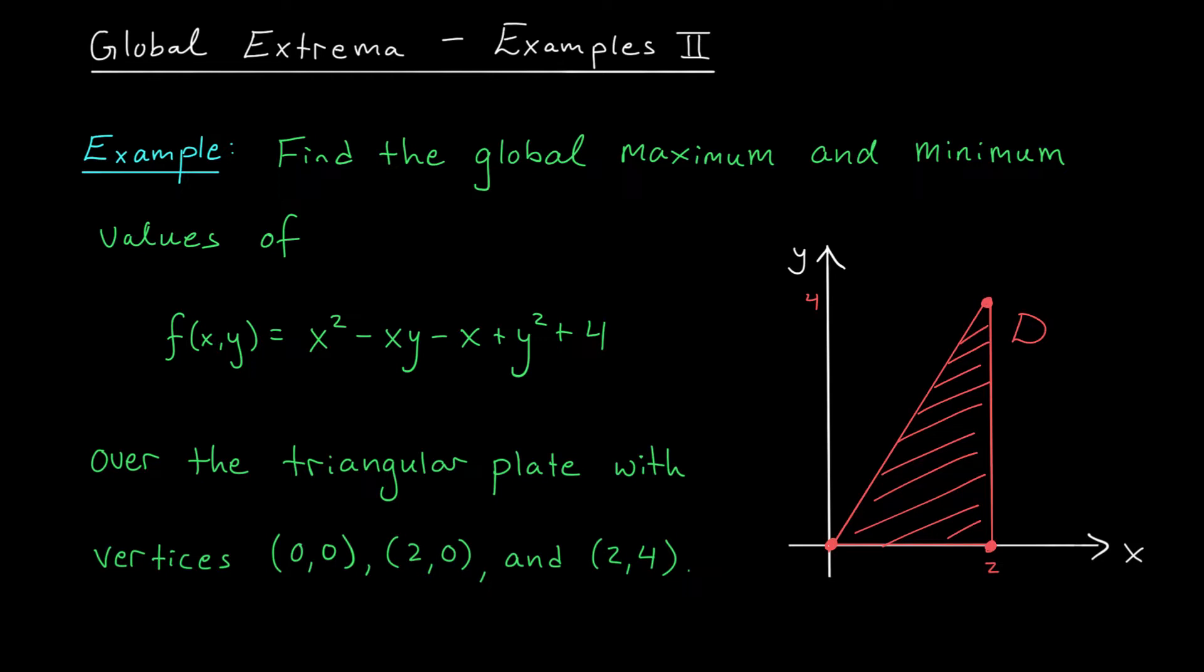Well, you know the drill, folks. The global max and min could either occur at critical points or at points along the boundary. So let's start by finding the critical points of our function that lie on this plate.